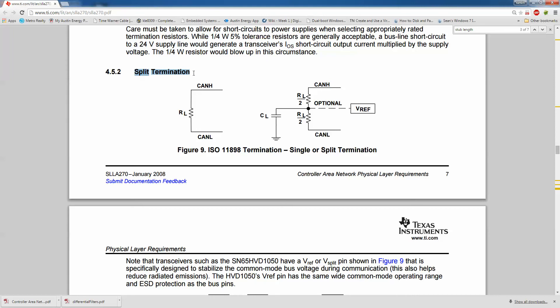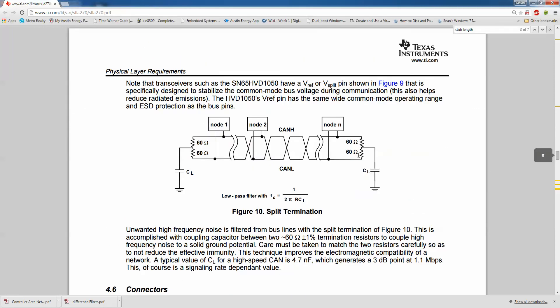So this style of circuit is called split termination, where you have the termination load split in two and then you feed the common node to a capacitor that forms a low pass filter and that creates a corner at this frequency, 1 over 2 pi R C.